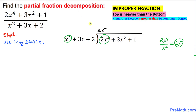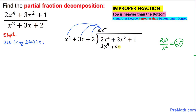Let's go ahead and multiply and distribute 2x² with all the terms in the divisor. So 2x² times x² gives 2x⁴, and 2x² times 3x gives plus 6x³, and then plus 4x². That's our first multiplication step.